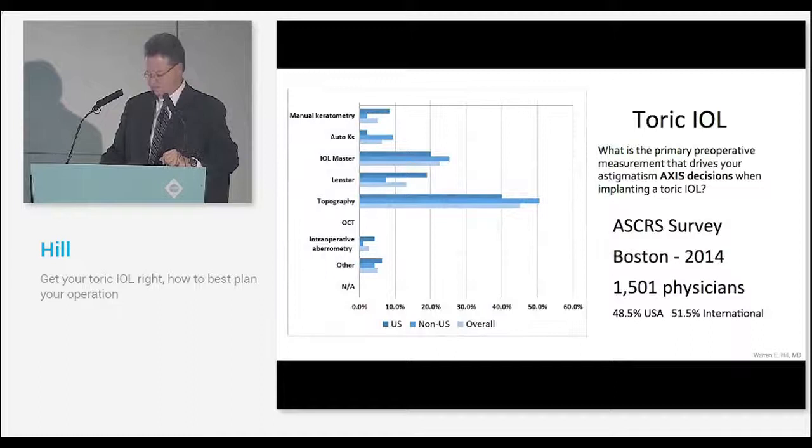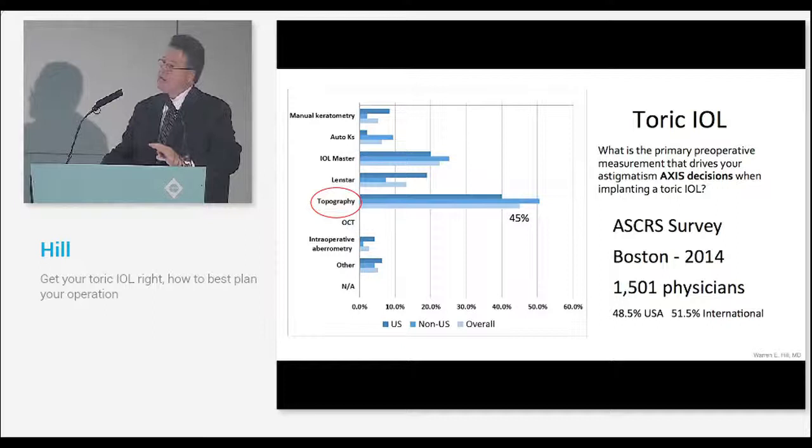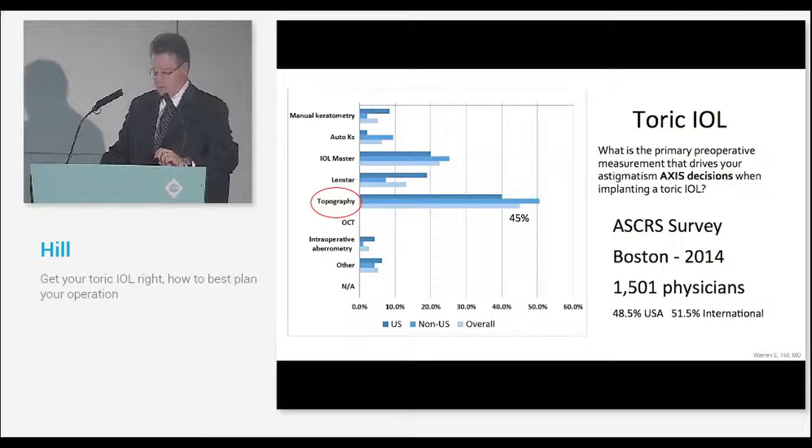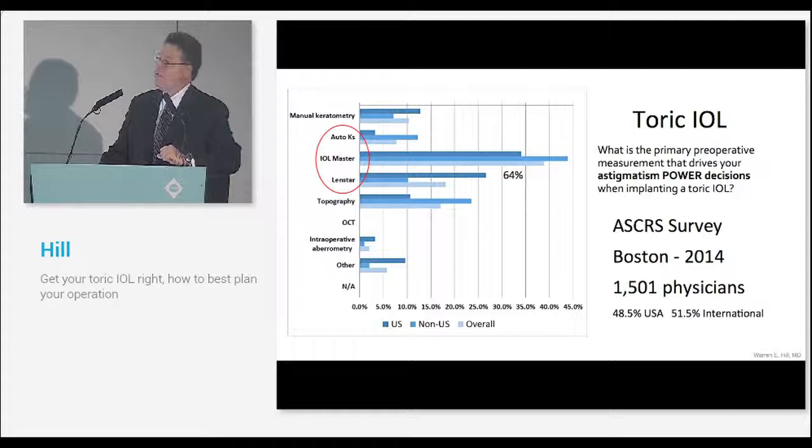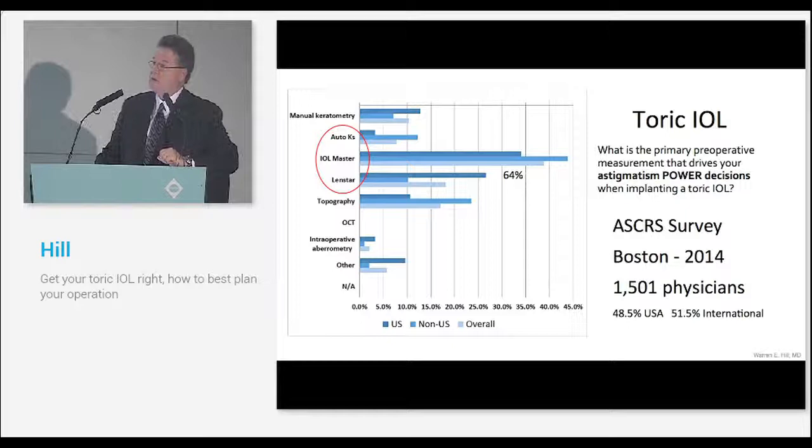We did a survey in the American Society of Cataract and Refractive Surgery and interestingly 45% of surgeons overall are now using topography to determine the steep meridian. This makes me feel very good because this is what we're going to talk about today. For the power difference between meridians, 64% of people are using small zone autokeratometry, the majority using IOLMaster just because that's the most common instrument. LenStar is coming up very quickly and it's interesting to note that 40% of all biometry sales in North America are now LenStar.